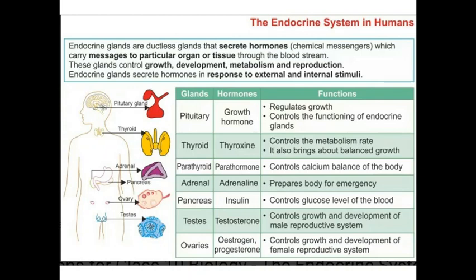Now we will study other hormones produced by the endocrine glands which are not related to the reproductive organs. Endocrine glands are ductless glands, and hormones are actually chemical messengers which carry messages to a particular organ or tissue through the bloodstream.